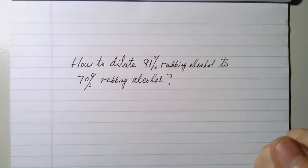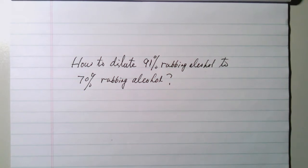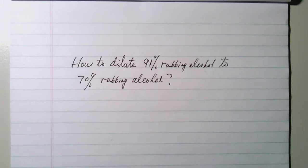In this video, we want to talk about how to dilute 91% rubbing alcohol to 70% rubbing alcohol. During pandemic time, most times you couldn't find 70% rubbing alcohol because 70% rubbing alcohol is more effective to kill viruses, but 91% rubbing alcohol is not as effective as 70% rubbing alcohol.